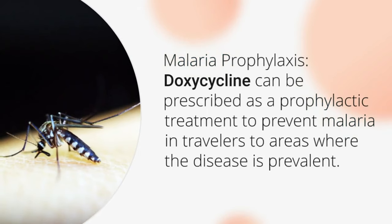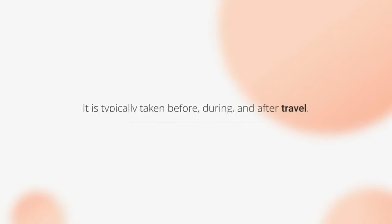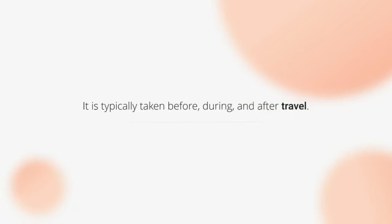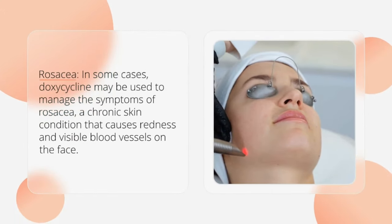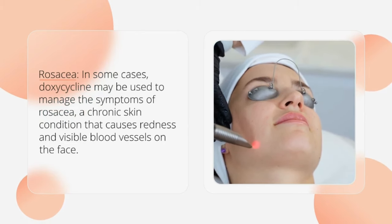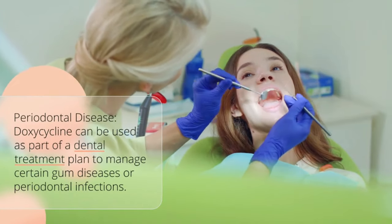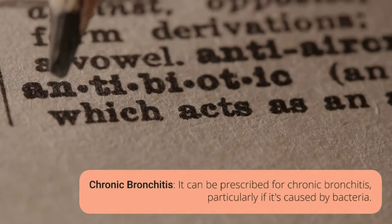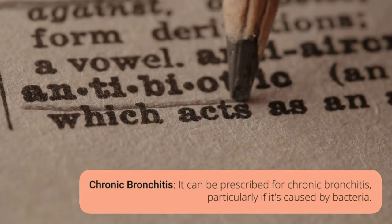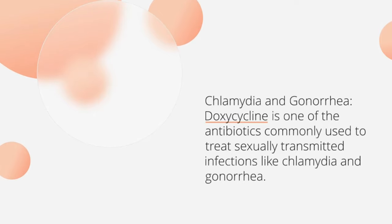Doxycycline can be prescribed as a prophylactic treatment to prevent malaria in travelers to areas where the disease is prevalent. It is typically taken before, during, and after travel. In some cases, doxycycline may be used to manage the symptoms of rosacea, a chronic skin condition causing redness and visible blood vessels on the face. It can also be used in dental treatment for gum diseases, prescribed for chronic bronchitis caused by bacteria, and is commonly used to treat sexually transmitted infections like chlamydia and gonorrhea.